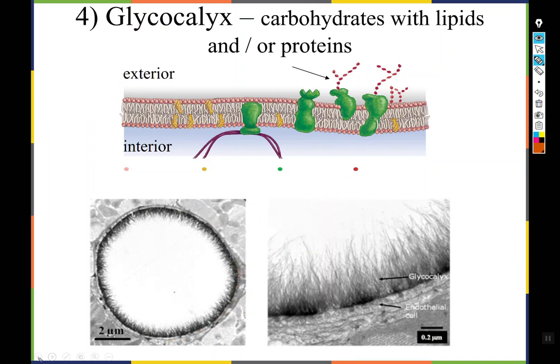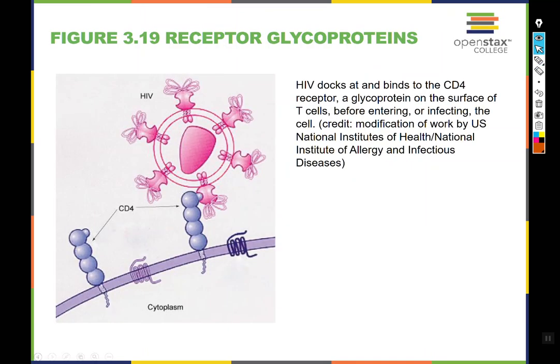Glycoproteins are usually helpful to the cell — used as recognition tools. When a white blood cell bumps into one of your body cells, the glycocalyx signals to the white blood cell that this cell belongs here and doesn't need to be destroyed. That's part of how the immune system works. HIV stands for Human Immunodeficiency Virus, and AIDS — Acquired Immunodeficiency Syndrome — is the pathology that results from the virus. HIV and AIDS are separate things; being HIV positive does not mean someone has AIDS.